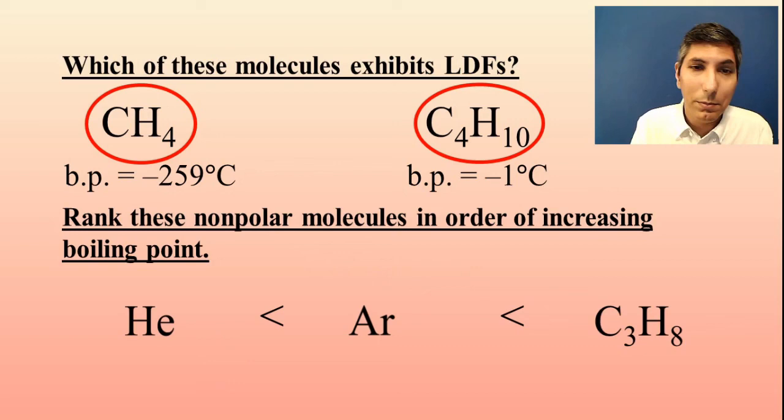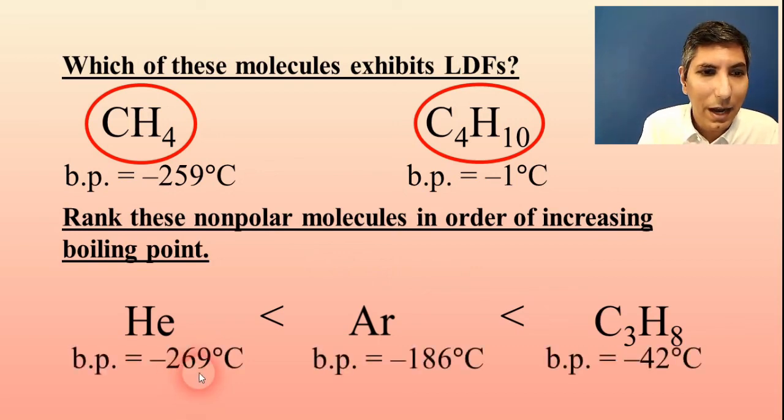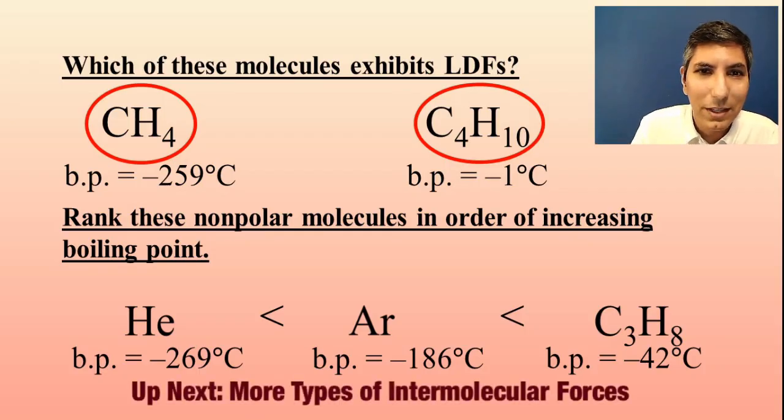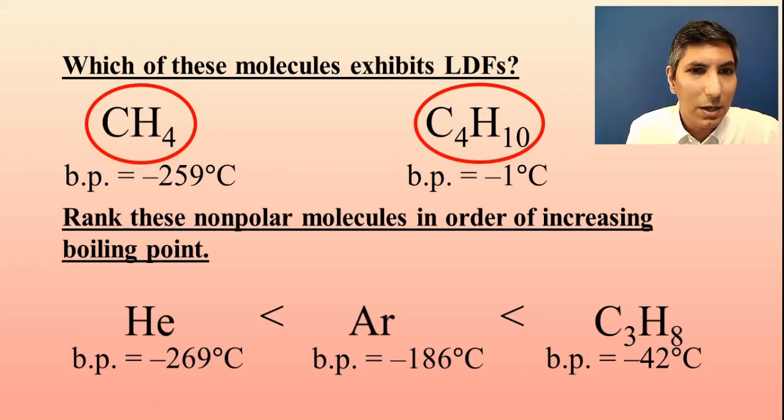And then propane has the most number of electrons. So it has the most polarizability and the highest boiling point. And guess what? We can look up these boiling points online or in the literature. We can see that our predictions are absolutely correct. We can predict relative boiling points of nonpolar molecules by looking at the number of electrons they have. I hope you learned something about London dispersion forces here. Go ahead and give me a thumbs up if you did. And I'm looking forward to seeing you in our next section as we continue on to looking at more types of intermolecular forces in our next video for Unit 3, Section 1.